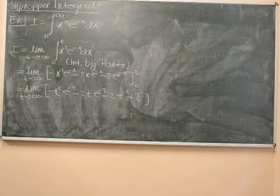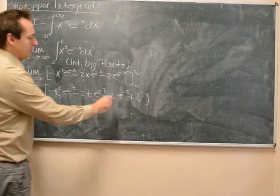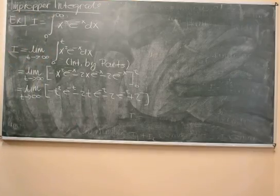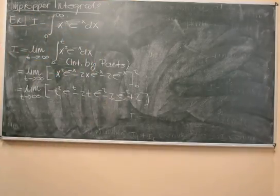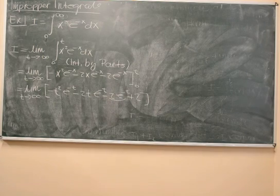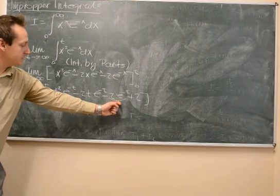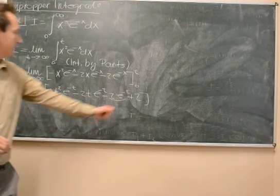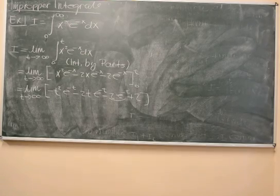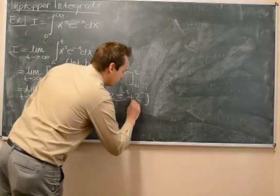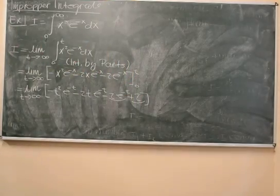Now it's a matter of calculating the limits. The term 2 e to the minus t: as t goes to infinity, e to the minus t goes to 0, so that term is fine. The constant 2: nothing happens to that, as t goes to infinity 2 just stays 2, so that one's okay.